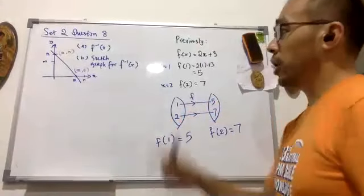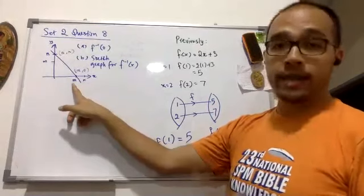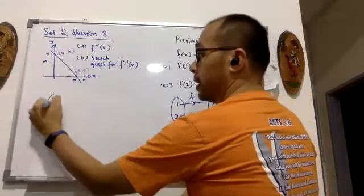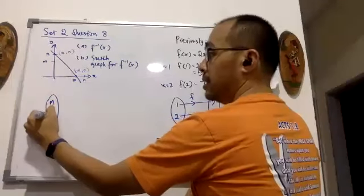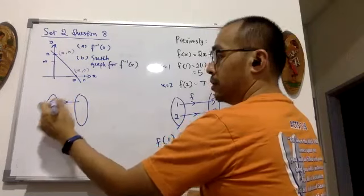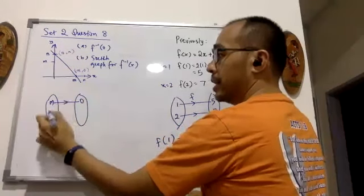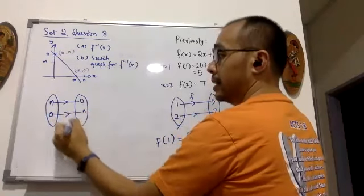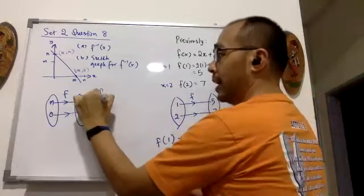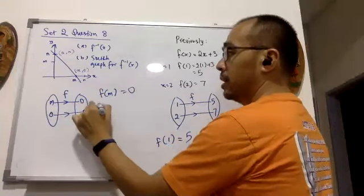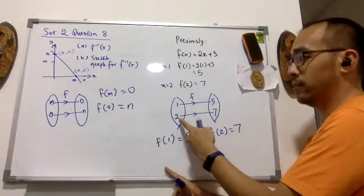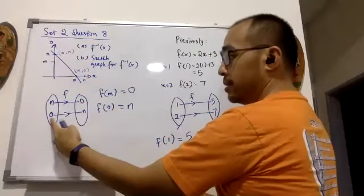Yesterday I gave you that this coordinate over here is (m, 0) and this coordinate over here is (0, m). If I translate this, my x-coordinates are the domain: m and 0. We find that m's partner is 0, and 0's partner is m. This is the function f. Therefore, f(m) equals 0 and f(0) equals m. Same logic: f(1) equals 5, f(2) equals 7, f(m) equals 0, f(0) equals 10.